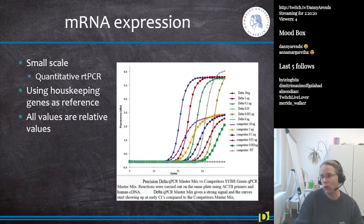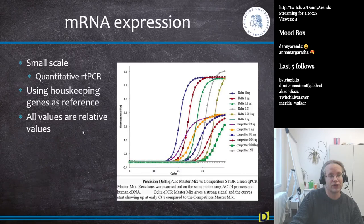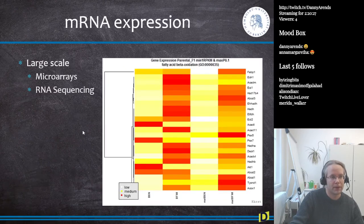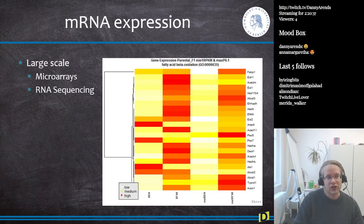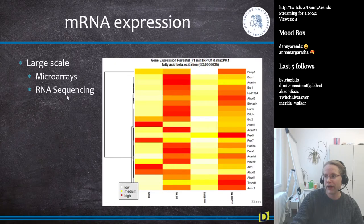Housekeeper genes are genes that are generally always on, no matter which cell type you're looking at. They are generally structural proteins, like proteins which code for cell wall components, since every cell has a cell wall. For small-scale experiments, qPCR is the way to go because you can measure a single gene very accurately across a wide number of samples, and it's relatively cheap compared to microarrays or sequencing.